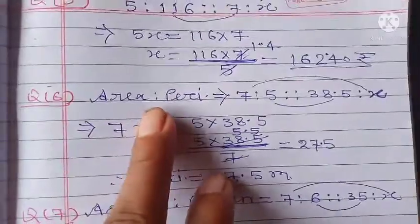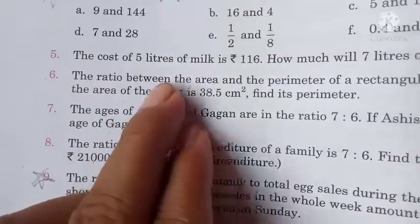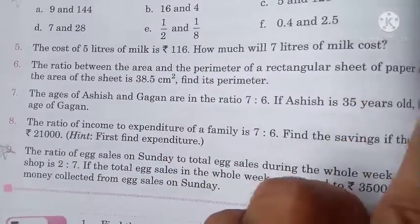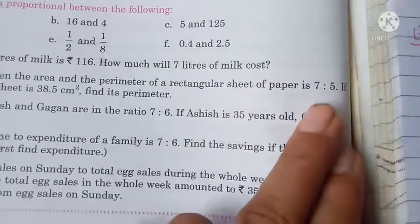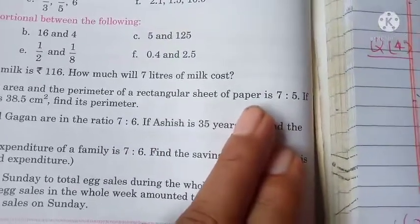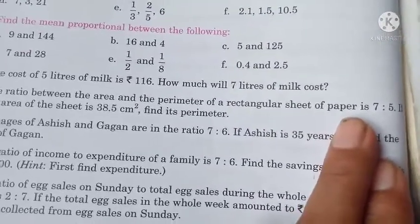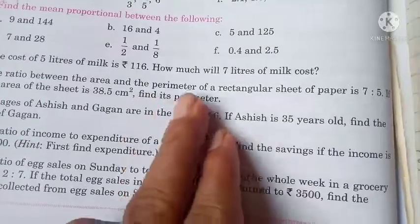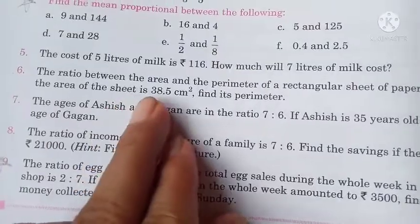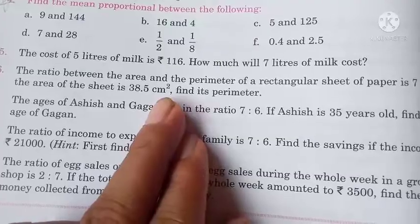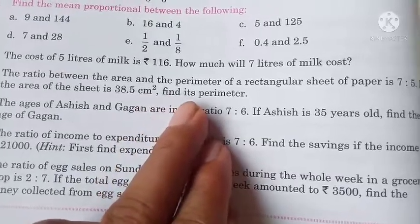Let us look at question 6. This is about area and perimeter proportion. The ratio between the area and perimeter of a rectangular sheet of paper is 7:5. If the area of the sheet is 38.5 cm square.